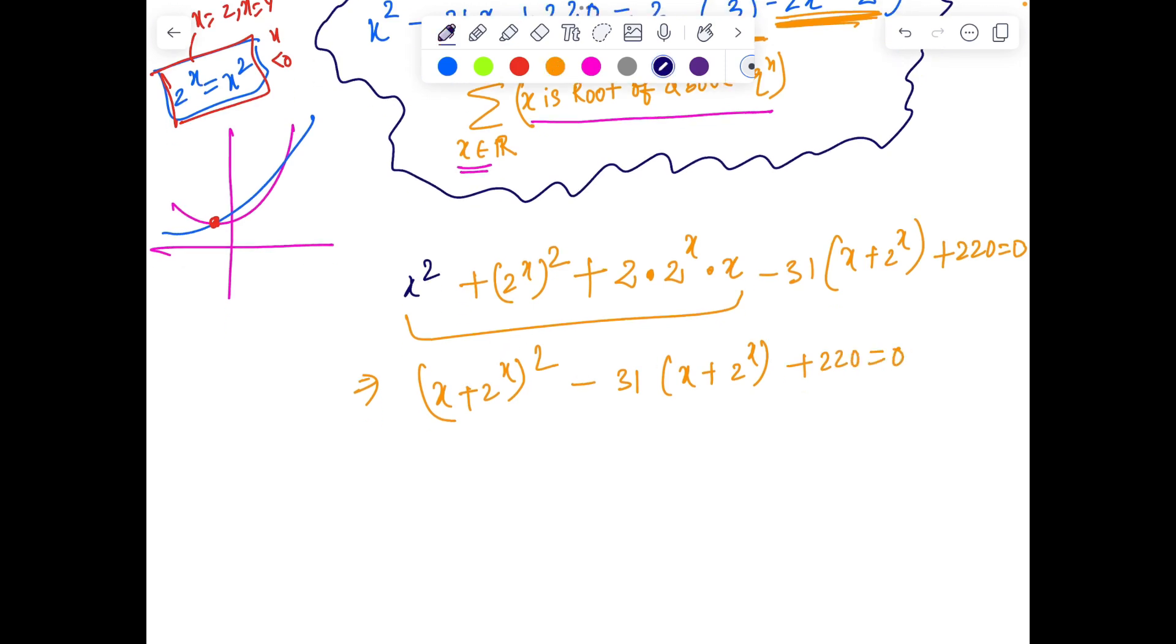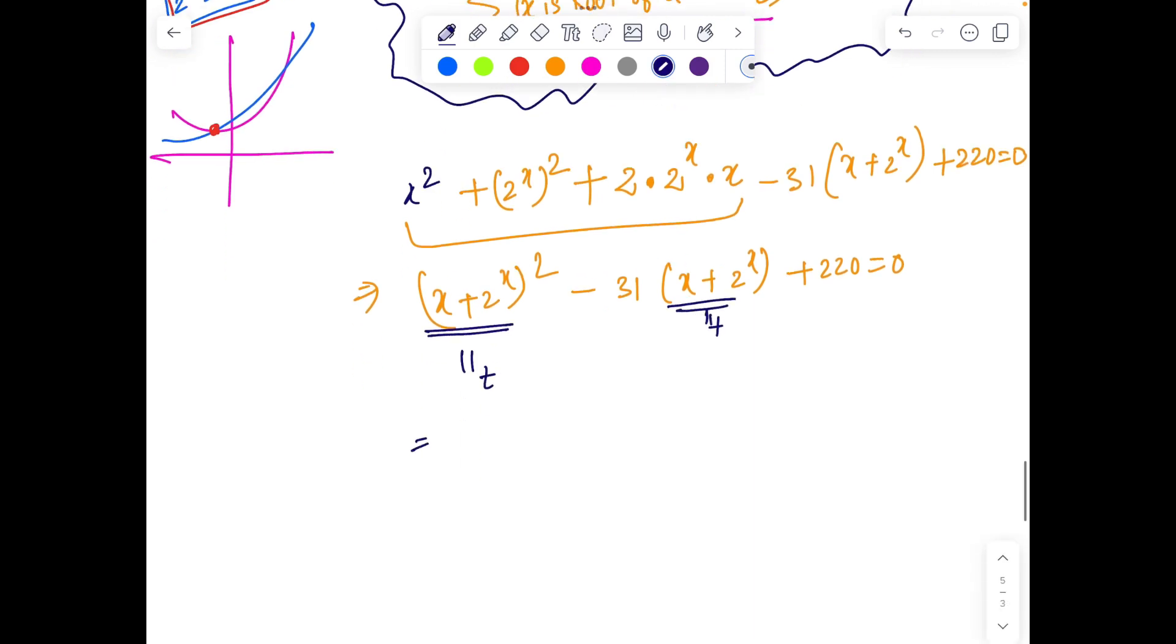That's a good game because X plus 2 to the power X whole square minus 31 times X plus 2 raised to power X plus 220 simply dies. So now fundamentally it's a quadratic. So if I take X plus 2 to the power X as T, the given expression boils down to T square minus 31T plus 220 equals 0. Now it's not tough to see the roots of this equation because clearly 220 we can factor as 11 into 20. Sum is 31, product is this. So that gives T equals 11 or 20.